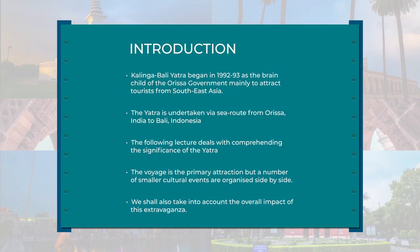Kalinga Bali Yatra began in 1992-93 as the brainchild of the Orissa government, mainly to attract tourists from the Southeast Asian region. The Yatra is undertaken via a sea route from Orissa in India to Bali, that is in Indonesia. This lecture deals with comprehending the significance of this Yatra, which was a relationship between two countries. The voyage is the primary attraction, but a number of smaller cultural events are organized side by side to enhance the overall impact of the festival. We should also take into account the overall impacts of this Yatra on the tourism of the state of Orissa.